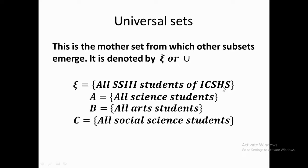For example, let's say the universal set represents all SS3 students of a conference in high school. Under it, we can have subsets: set A representing all science students, set B representing all art students, and set C representing all social science students.